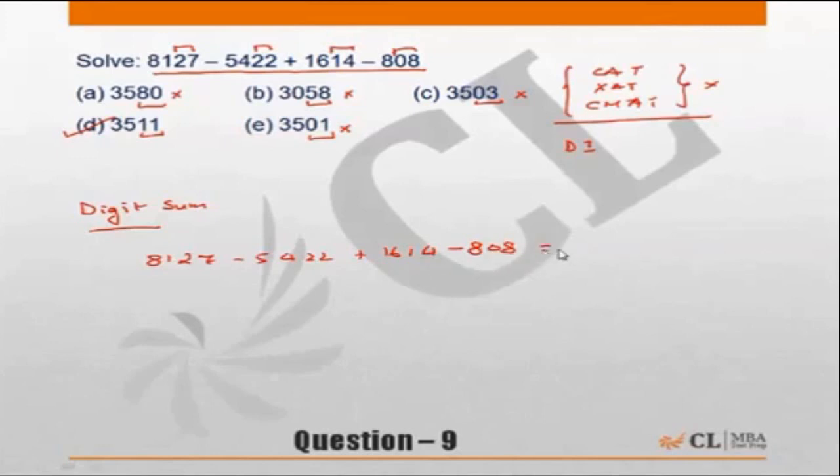Now whatever is the answer, you need to find the digit sum of this number. We can say if you find the digit sum of each of them and add them or subtract them as given in the question, that should be the same as the digit sum of the answer.